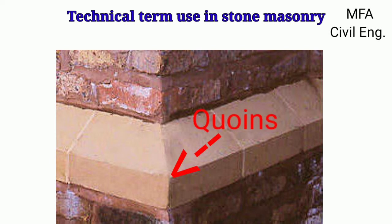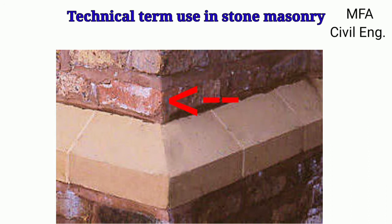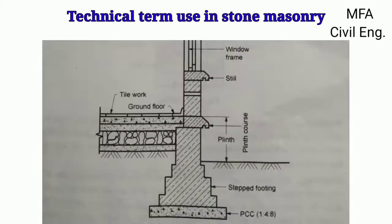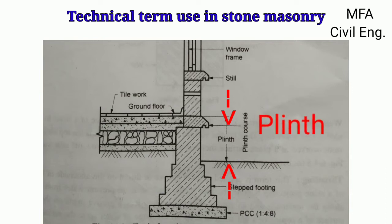The external corner or angle of a wall surface is called a quoin, and the stones forming the quoin are known as quoin stones. The block of stone used at a corner where two walls meet at 90 degrees is called a quoin header.